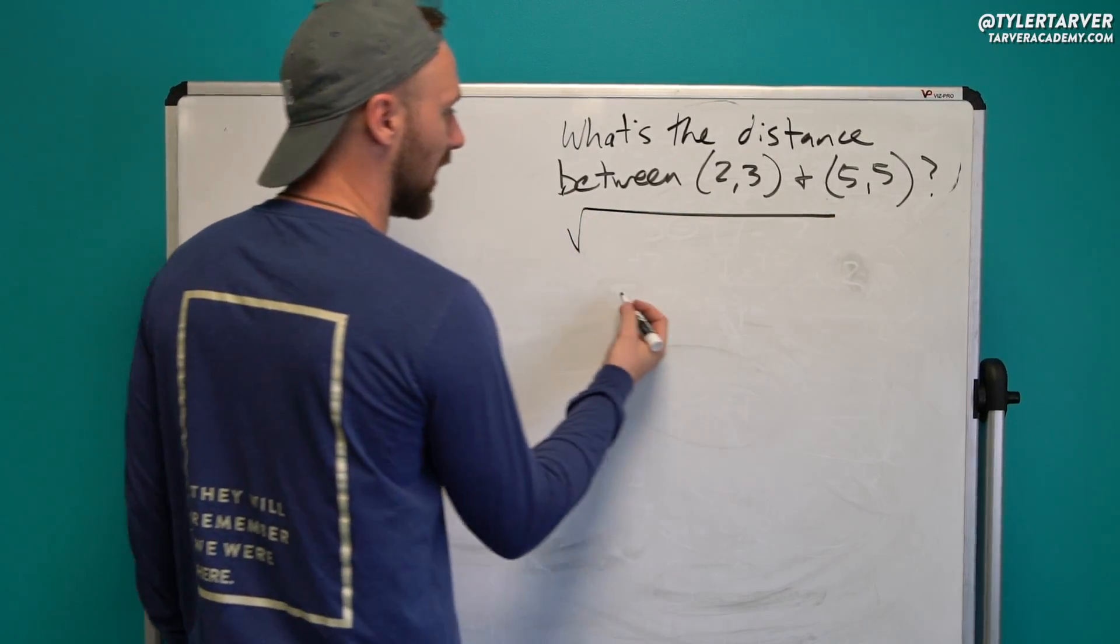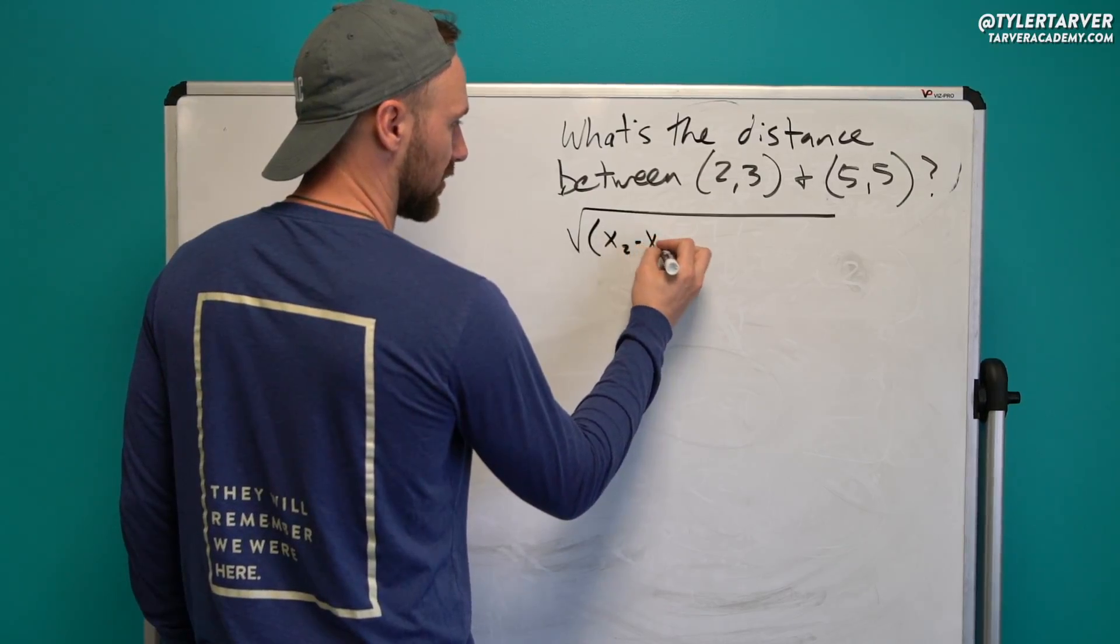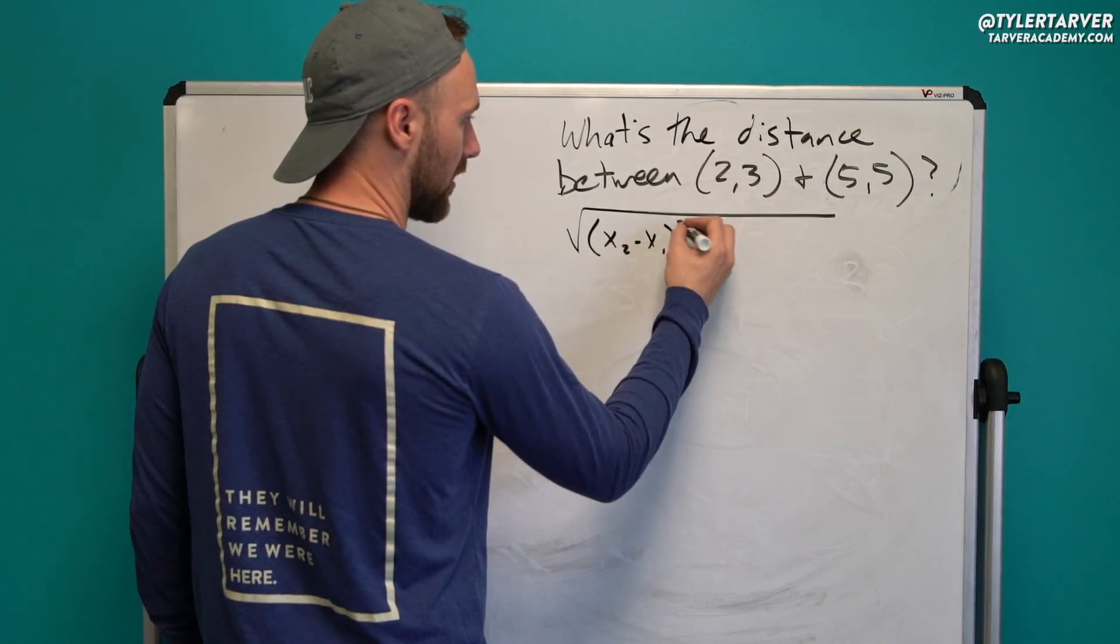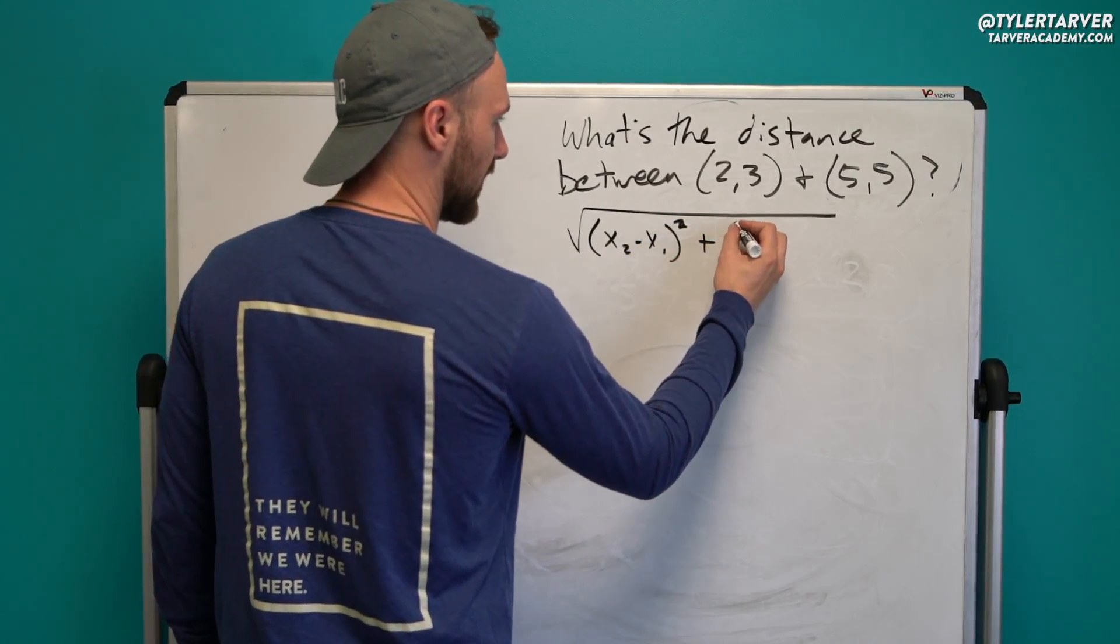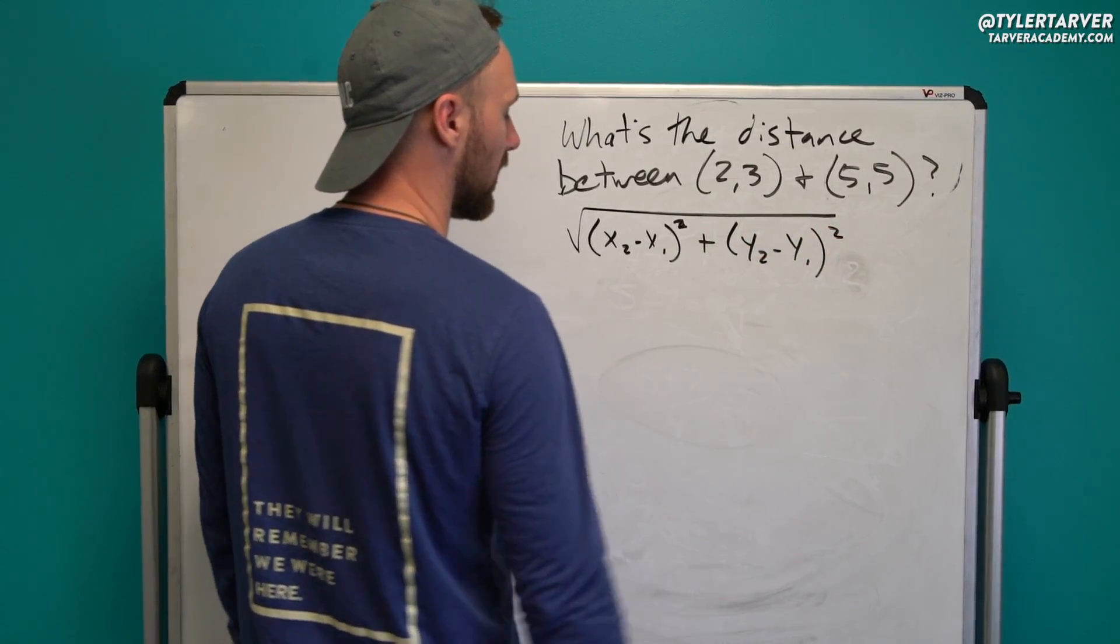You just do the radical of, and then you've got x2 minus x1 squared plus y2 minus y1 squared. All right,